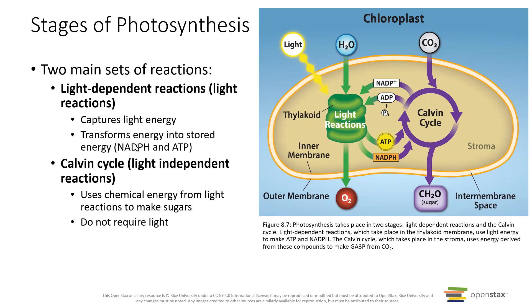If you're thinking, wasn't it NADH in cellular respiration? It was. We have a slightly different coenzyme here in photosynthesis - same function, it's going to be a proton/electron carrier. The light-independent reactions, or the Calvin cycle, are going to use that stored energy from NADPH and ATP to do another set of chemical reactions and make sugars. We're going to do the light reactions first in this video, and the next video will be the Calvin cycle.